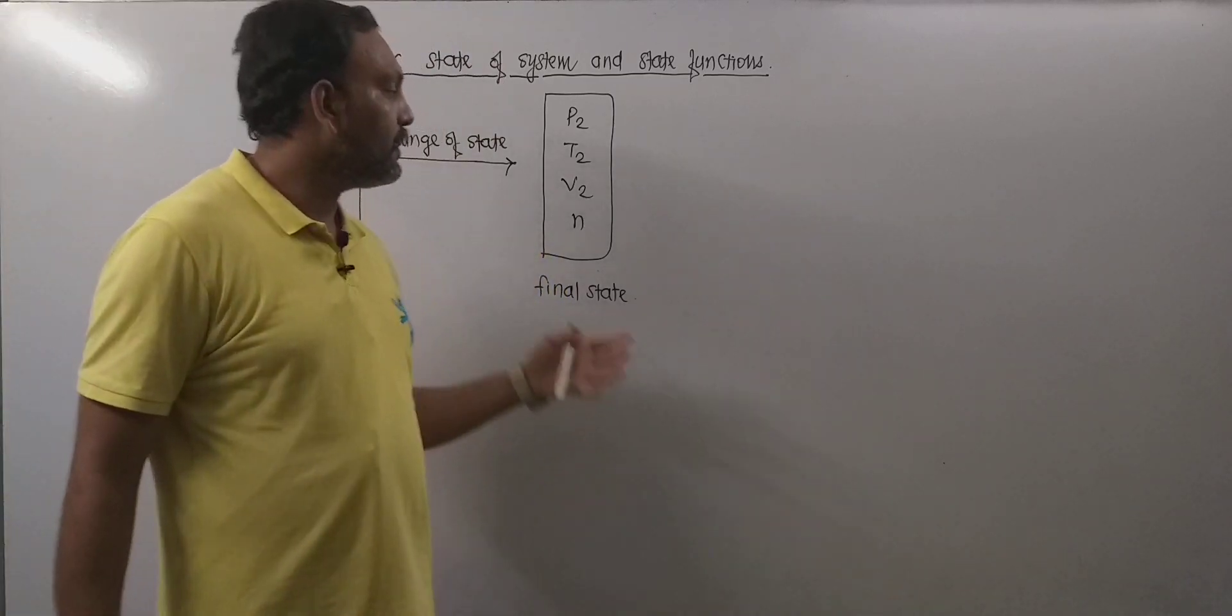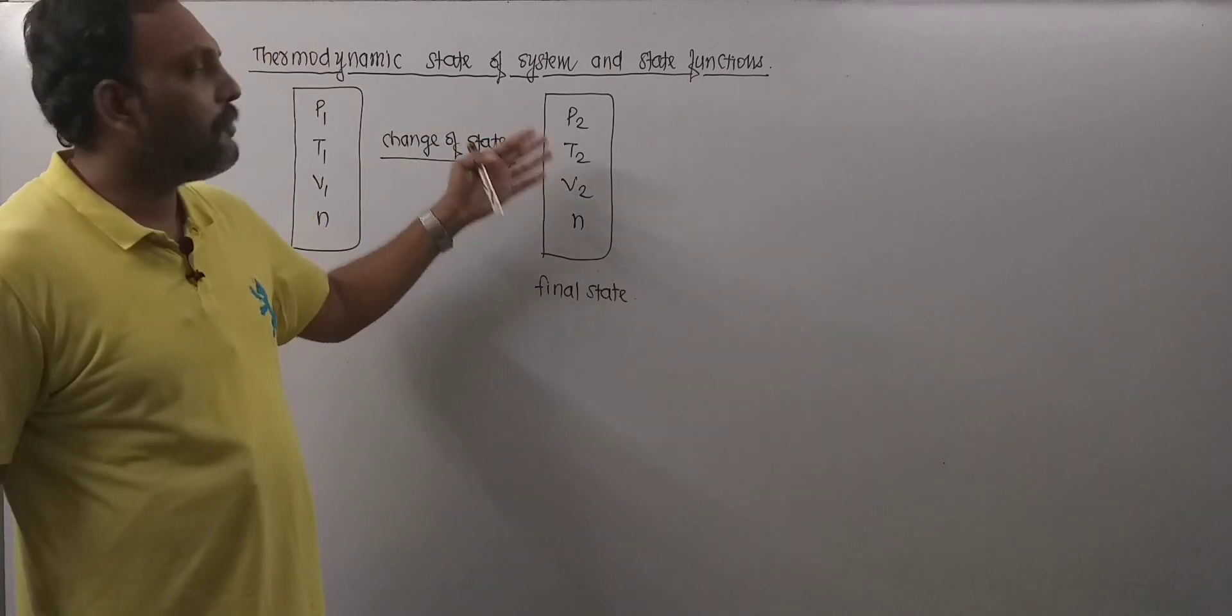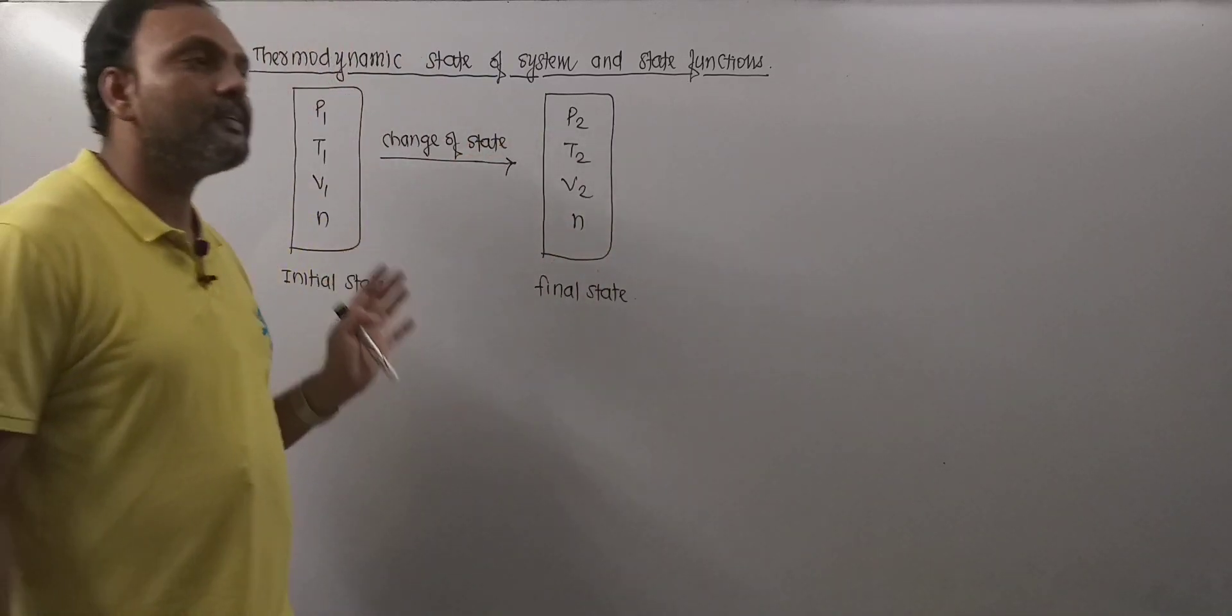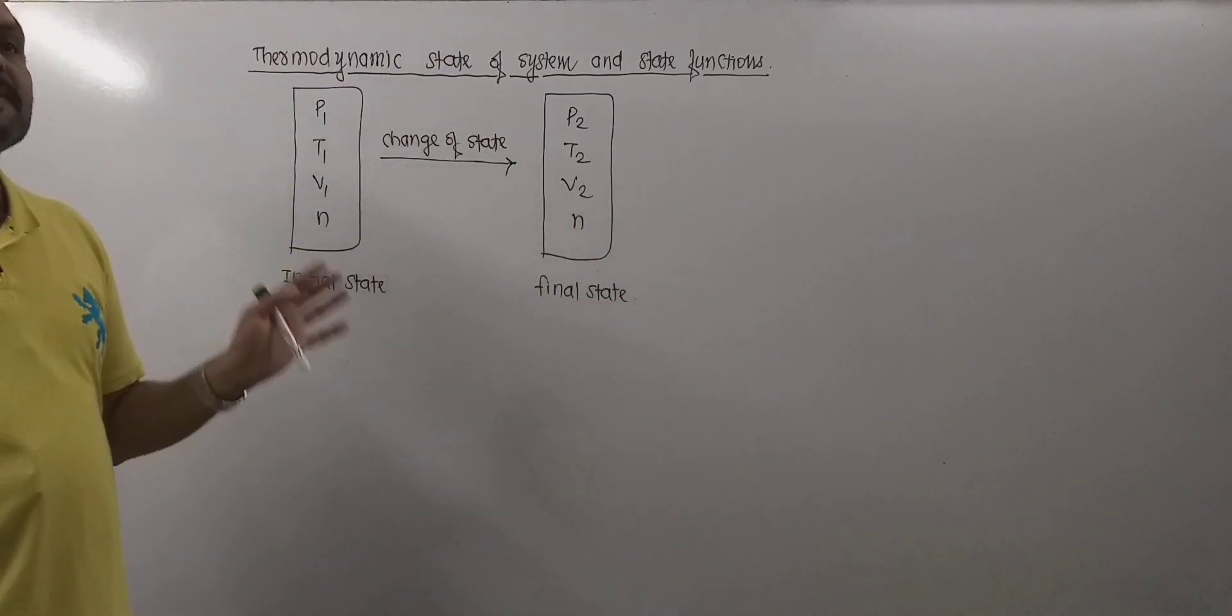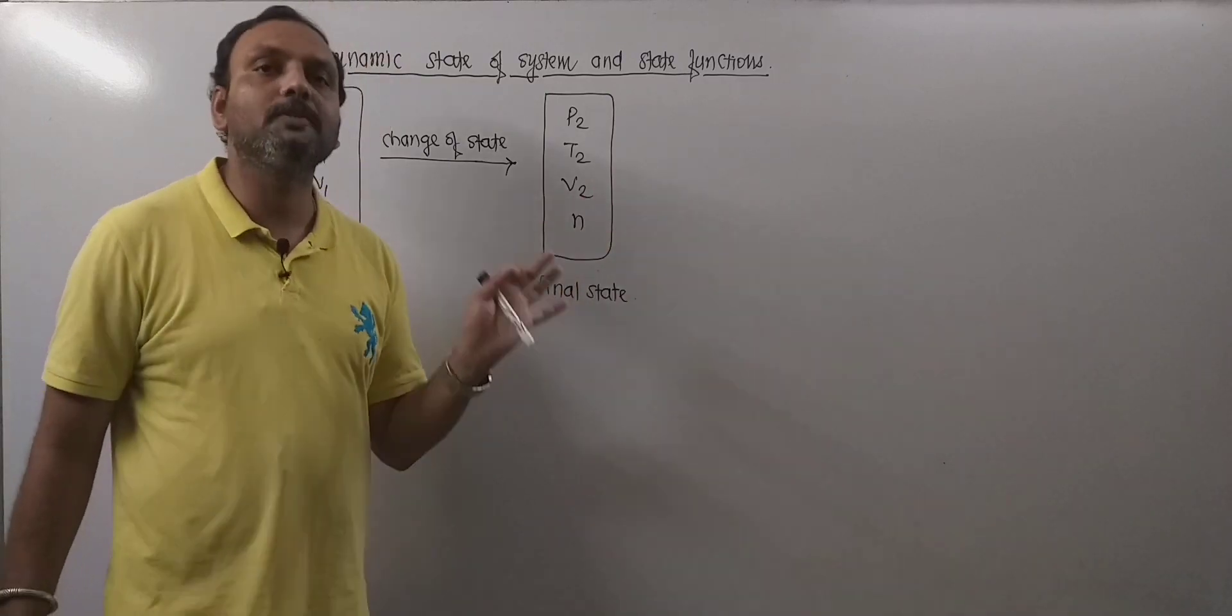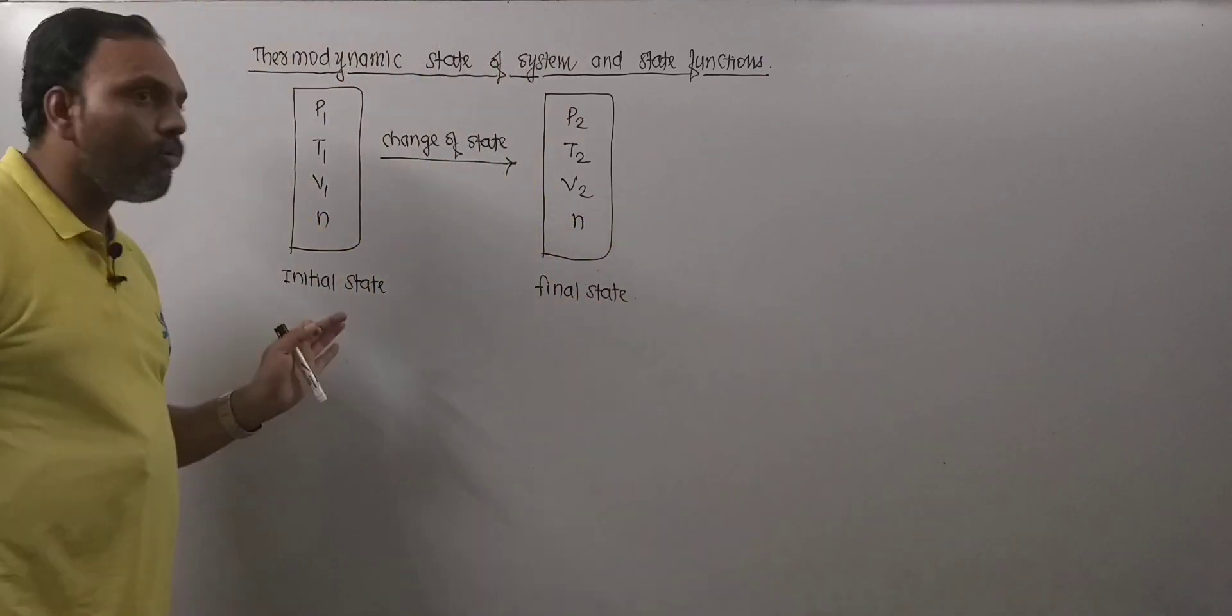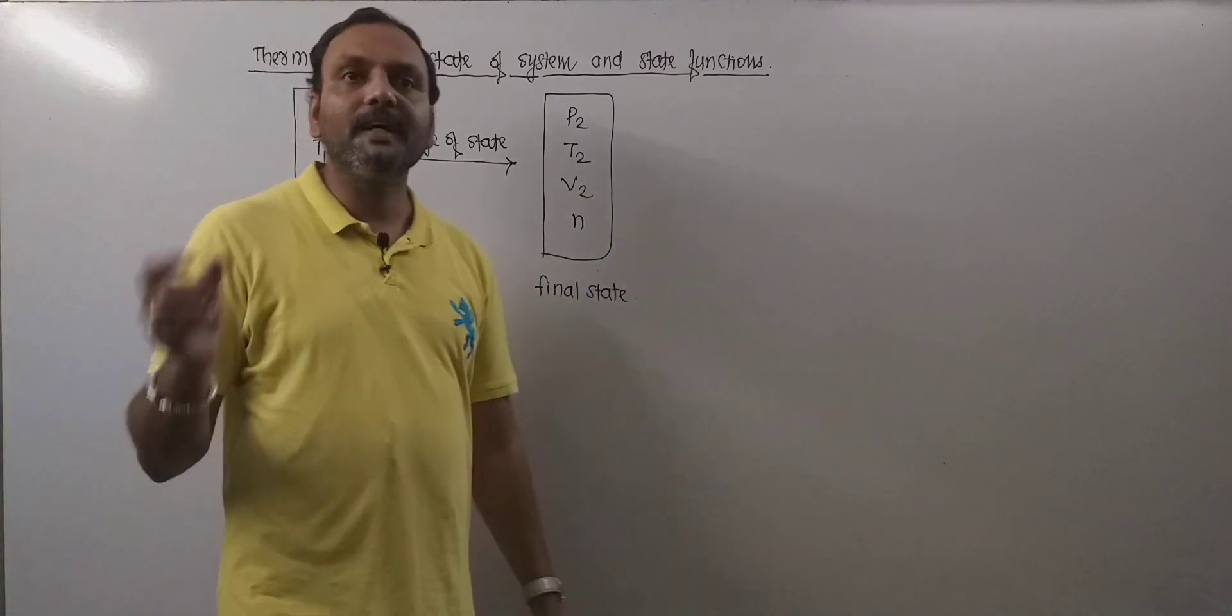The fundamental properties are having fixed values. Therefore, one can say the system is in a certain state, say final state. A system is said to be in a specific state if fundamental properties or macroscopic properties of the system have fixed values.